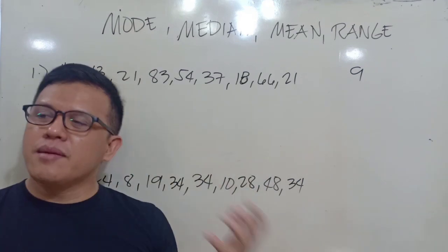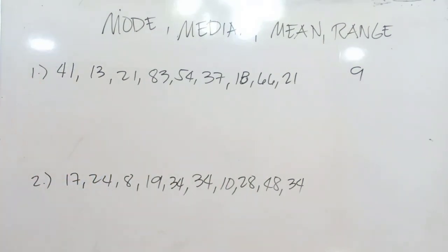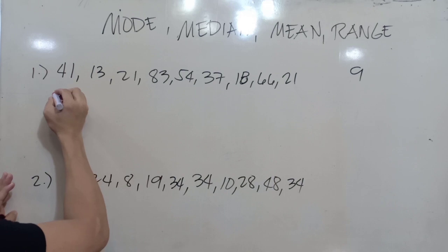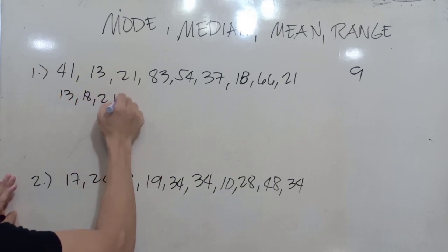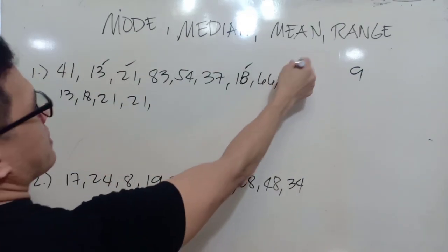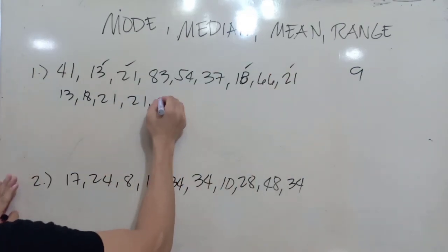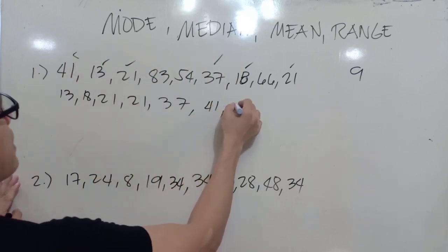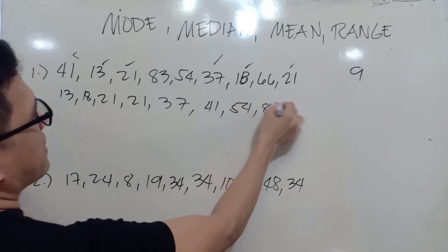But before that, before we're going to get the mean, the median, and the mode, let's get first the range. So let's arrange this one from the lowest to the highest. The first one is 13, second one is 18, and next one is 21, 21, and then we have 37, we have 41, and we have 54, and we have 66, and 83.